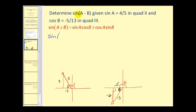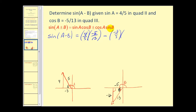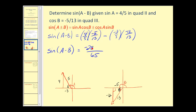Using the identity, the sine of a minus b equals sine a times cosine b minus cosine a times sine b. Sine a is four-fifths, cosine b is negative five-thirteenths. Cosine a from the reference triangle is negative three-fifths, and sine b is negative twelve-thirteenths. The common denominator is sixty-five. The first numerator is negative twenty, minus negative thirty-six gives positive thirty-six, so the result is negative fifty-six over sixty-five.